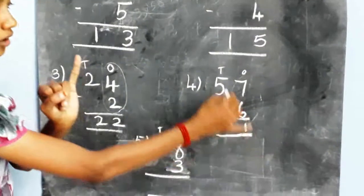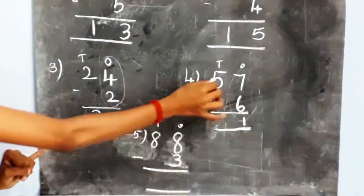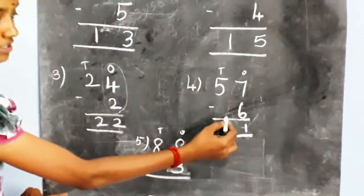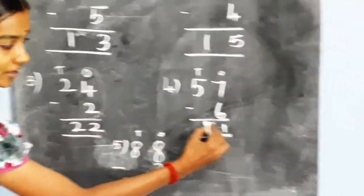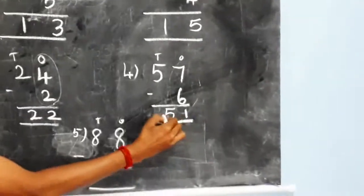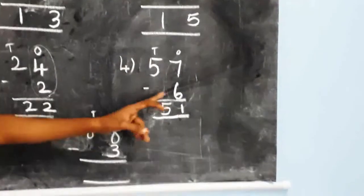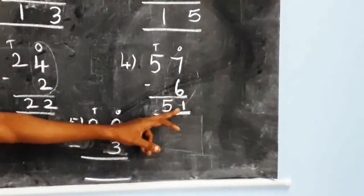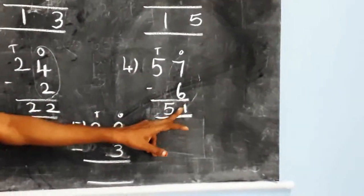Now subtract the tens place. Here five minus zero equals five. So fifty-seven minus six is fifty-one.